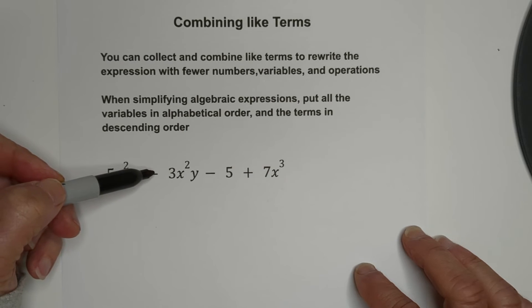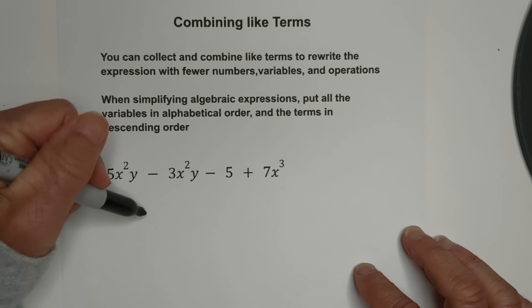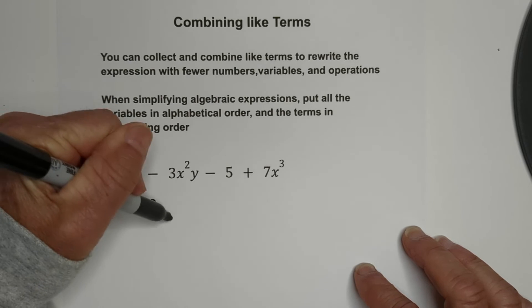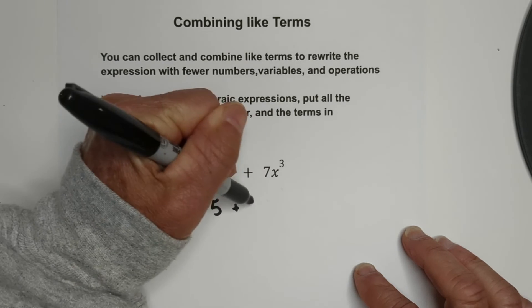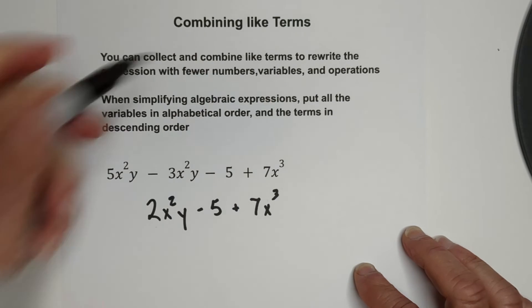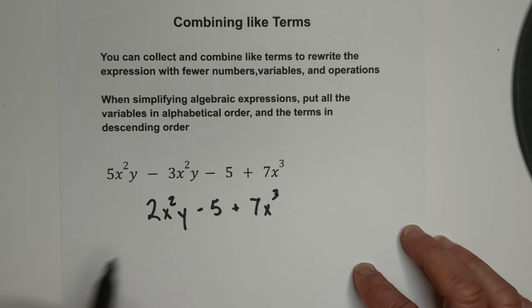A five and a negative three would be two X squared Y. I'll bring down the five and the seven X cubed. So now we've simplified all the terms. We need to put it in descending order.